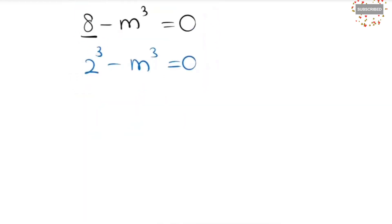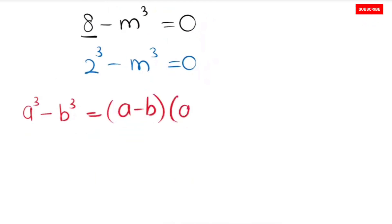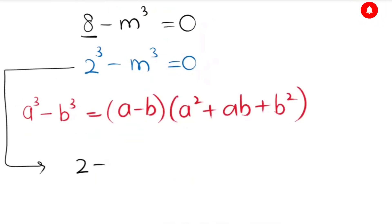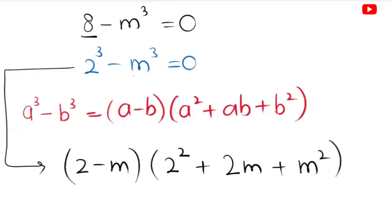Now I am going to use the algebraic identity — the difference of cubes formula: a cubed minus b cubed equals (a minus b)(a squared plus ab plus b squared). So this equation turns to (2 minus m)(2 squared plus 2m plus m squared) equals 0.